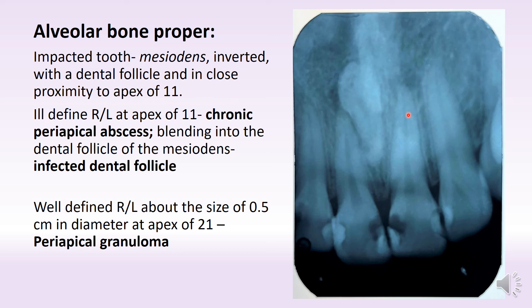And that is indicative of a periapical granuloma. So 1-1 is having an ill-defined radiolucency whereas 2-1 has a reasonably well-defined radiolucency.